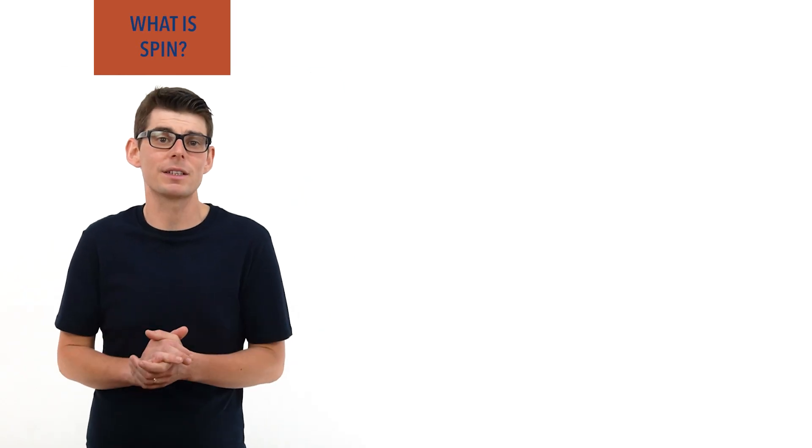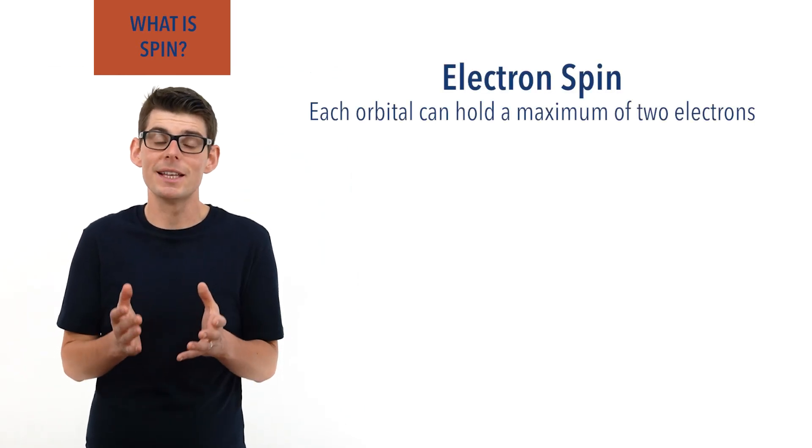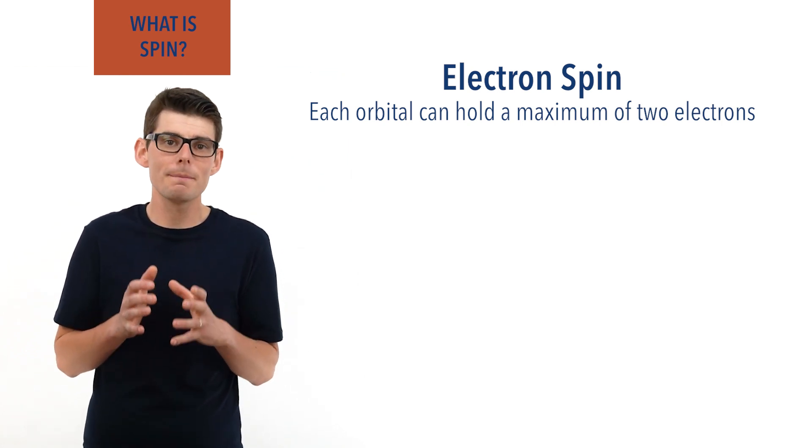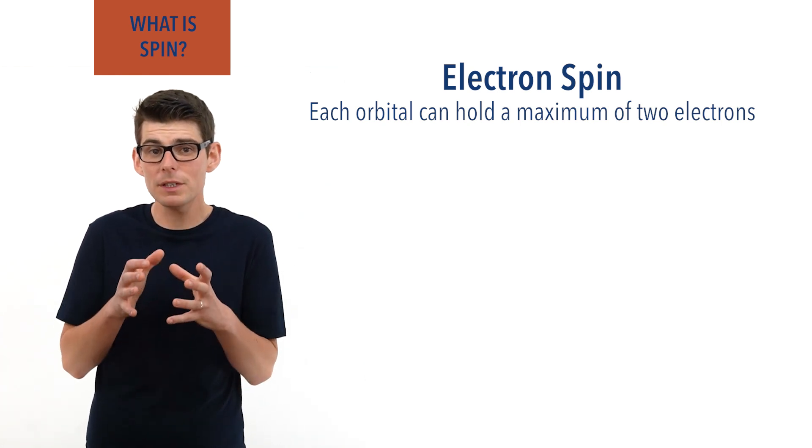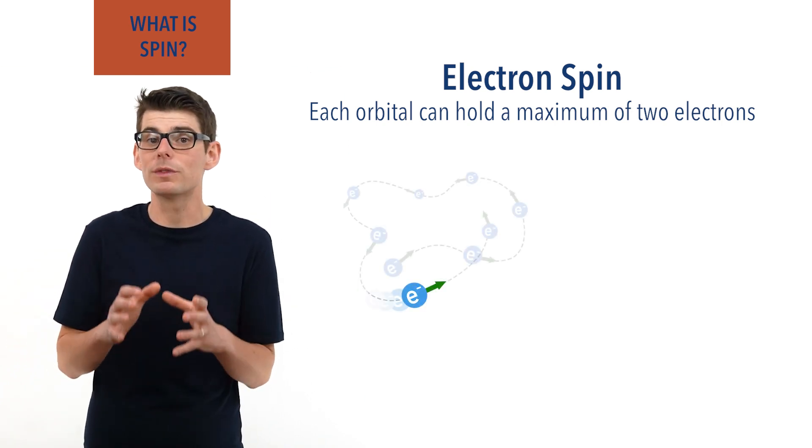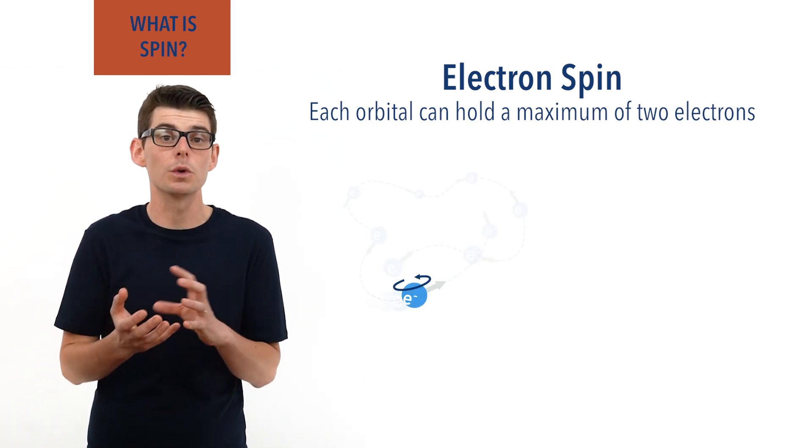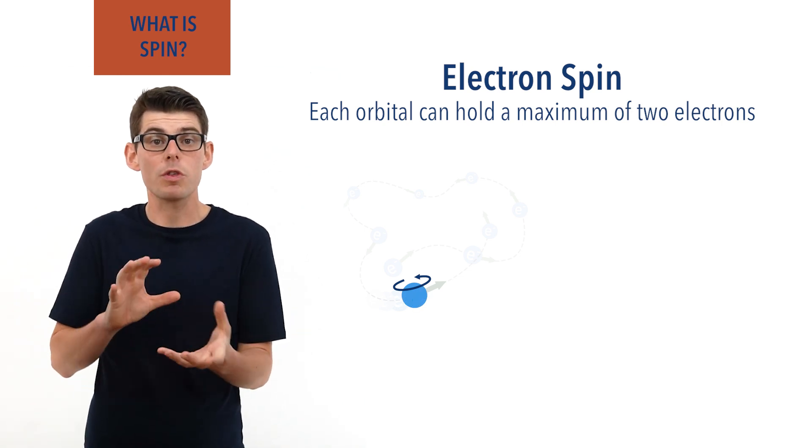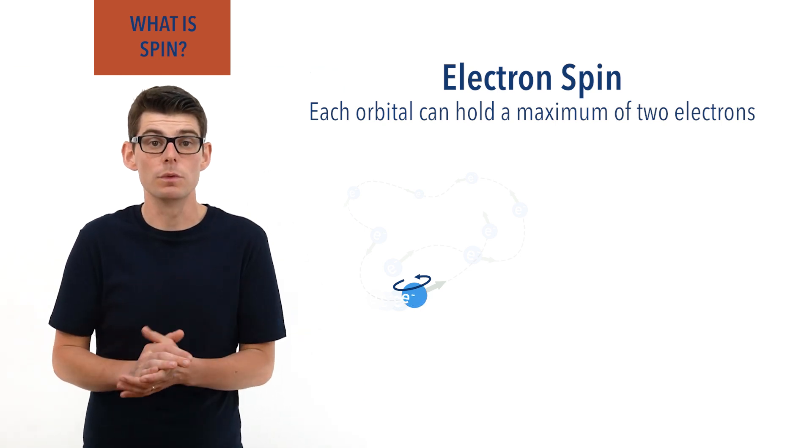Spin is a very abstract idea that doesn't really make sense in our everyday world. But as a simple model, if we imagine electrons as being very small particles moving through space, as they move they will also rotate or spin, just as a ball being thrown through the air will spin and rotate as it moves.